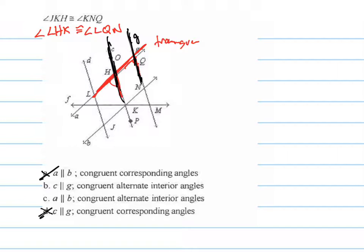Now what's the reason for it? Well, what are these angles right here? How are those two angles, those two red angles that I drew in there, related to each other? Are those alternate interior or corresponding?